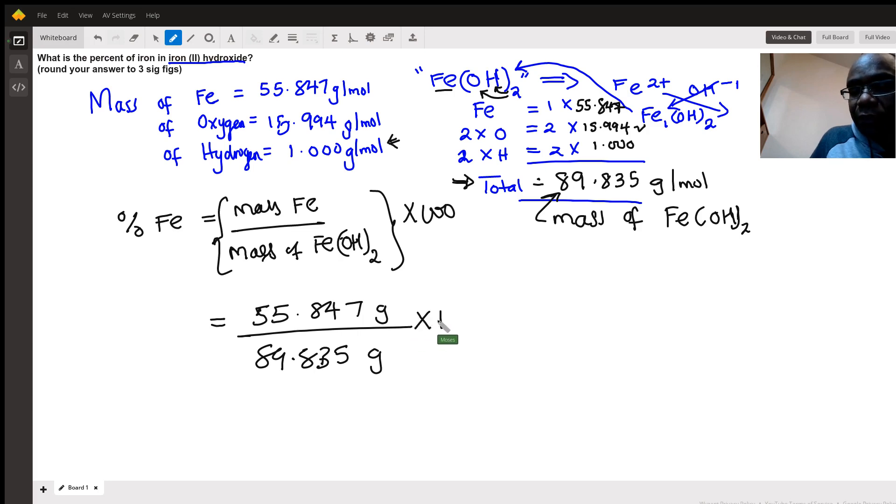You know it's per mole per mole—that will cancel out. So we multiply by 100. In fact, these two also will cancel out, so that should give you the percent mass.